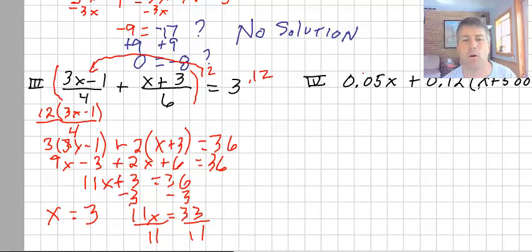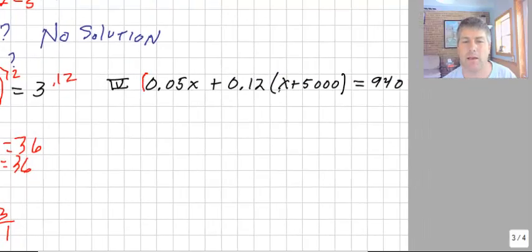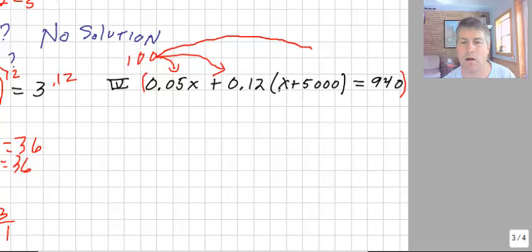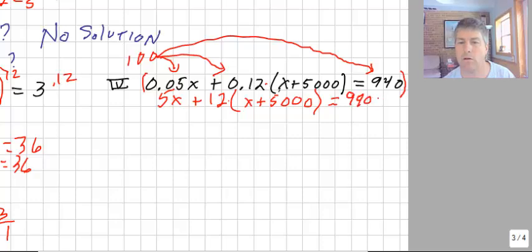Sample problem number 4. This one has decimals. We can clear the decimals. The decimals are just like fractions, by simply multiplying both sides of the equation or everything by 100. So if we multiply everything by 100, that is legal. Be careful not to multiply what's in parentheses by 100. Once we multiply the 12 hundredths by 100, that will take care of the parentheses. So 100 times 0.05x, we get 5x plus 12 times x plus 5,000 equals 94,000.